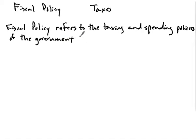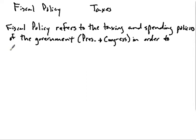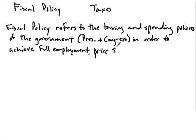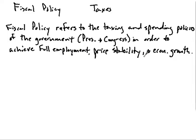For our federal government, this would be the president or executive branch and Congress, which would be the legislative branch. When they get together and set either taxing or spending policies, they do this in order to achieve the three basic macroeconomic goals: full employment, price stability, and economic growth. Fiscal policy asks what taxing and spending policies the federal government uses to achieve these three primary objectives.